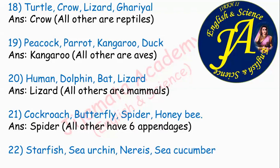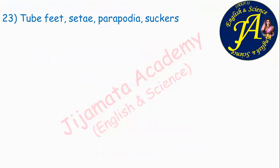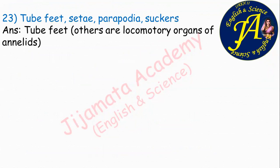Starfish, sea urchin, nereis, sea cucumber. The correct answer is nereis, because starfish, sea urchin, and sea cucumber are all echinoderms while nereis is an annelid. Next: tuft, cilia, parapodia, suckers. The correct answer is tuft, because cilia, parapodia, and suckers are locomotory organs of annelids, while tuft is the locomotory organ of starfish, which is an echinoderm.